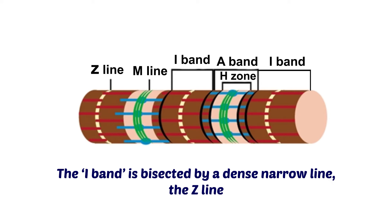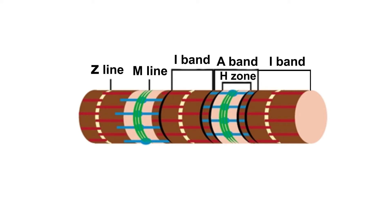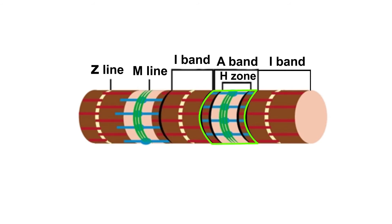Thus each sarcomere includes repeating units of Z line, I band, A band, I band, and the next Z line.